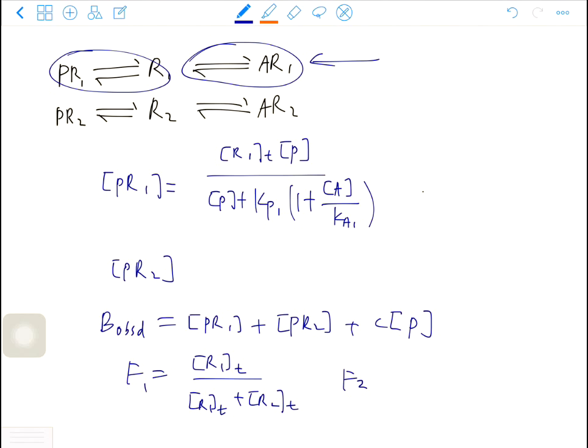For the fraction of receptor 2, you have the similar thing, R2T over R1T plus R2T. And we know the total concentration, RT equals the concentration of R1T plus R2T.